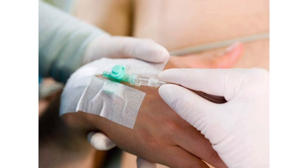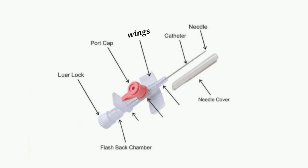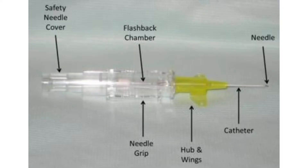You just need to know that there is a needle inside the catheter. We have a cover to protect the needle, then we have the wings, port cap, flashback chamber where the blood draws back from the vein when you insert the cannula, and lastly the luer lock.